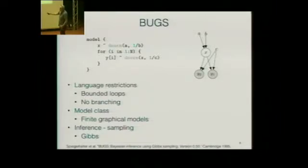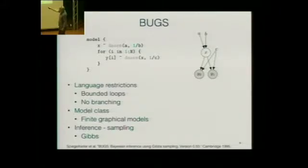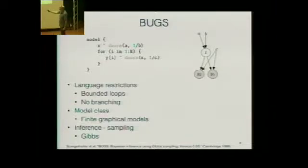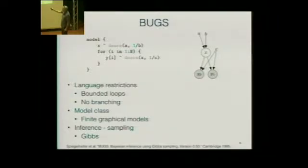A BUGS program looks something like this. There's a model block, bindings for free variables A, B, C, and a data block which binds values for Y. You can evaluate this program in a couple of ways: execute it normally, where X is drawn from a normal distribution with mean A and precision 1/B, evaluating the loop as you would normally. But since I know the values for Y, the evaluation model says: what's the posterior distribution of X given the values of Y, A, B, and C?